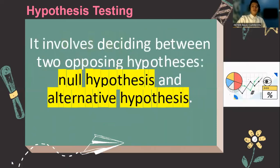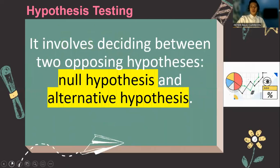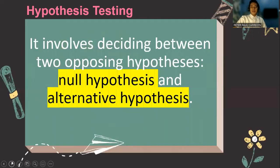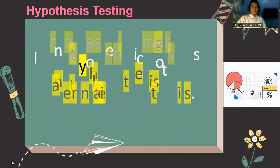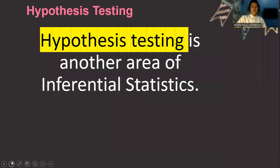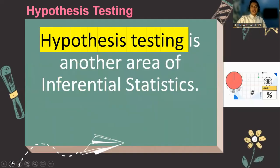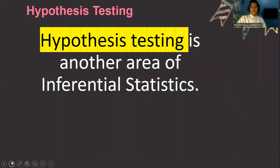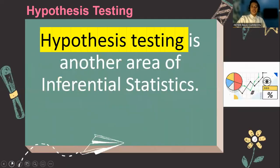It involves deciding between two opposing hypotheses. Hypothesis testing is another area of inferential statistics because we are already done with estimation, so that is how they are different from each other.